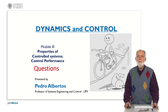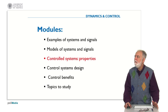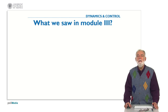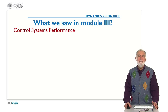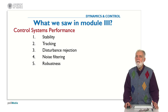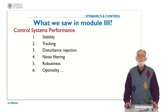I will ask you some questions. The modules we have seen till now are the examples, the models, and the control system and properties. In module three, we saw the relevance of feedback to establish control systems, and also the performance: stability, tracking property, disturbance rejection, noise filtering, robustness, optimality, and some others.